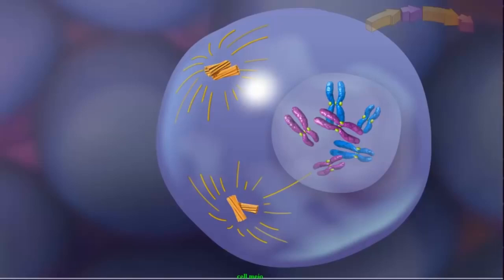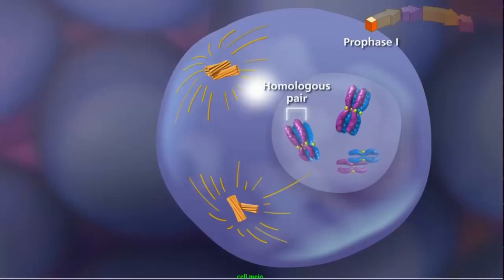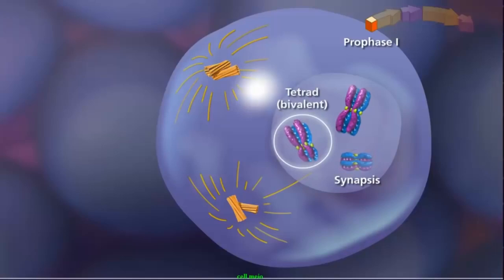The first event occurs during prophase I, when homologous pairs of sister chromatids lie side by side in a process called synapsis, forming a tetrad or bivalent. The homologous chromosomes share similar, but not necessarily identical genes.